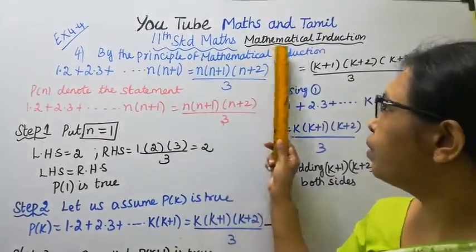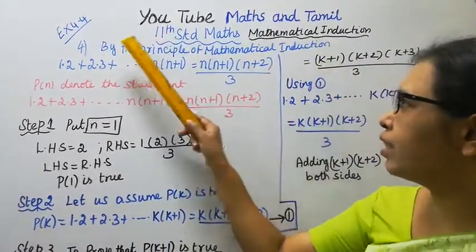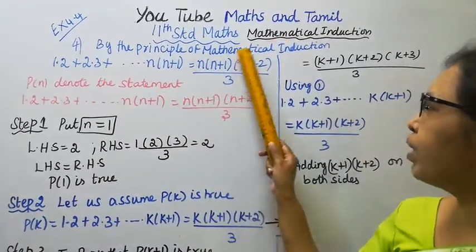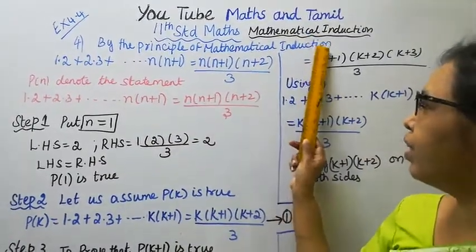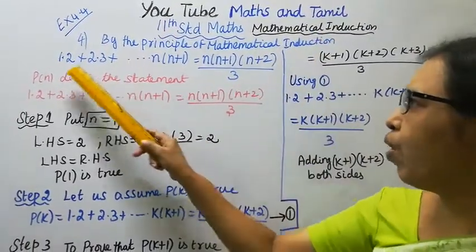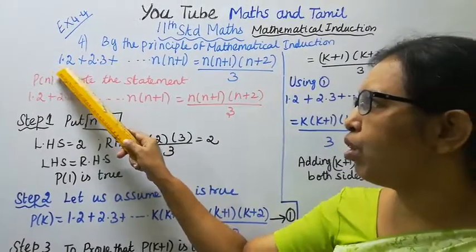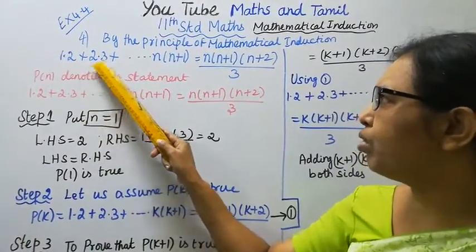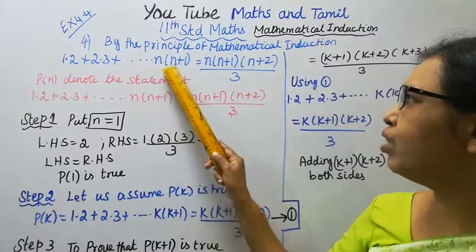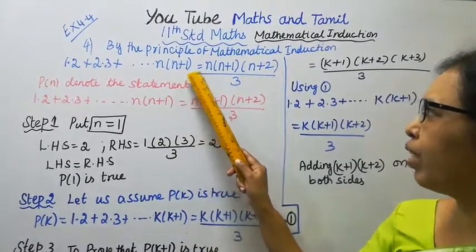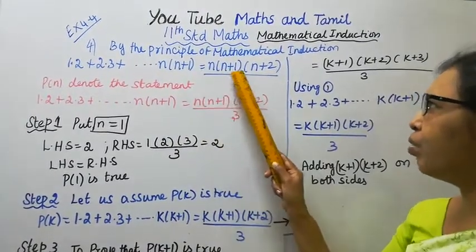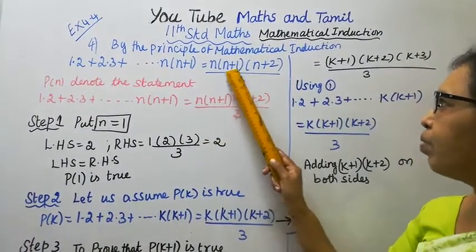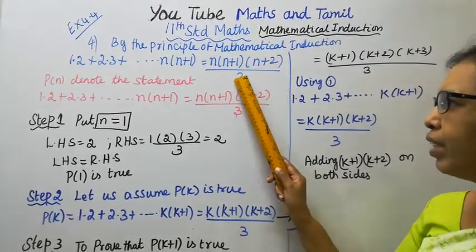Mathematical Induction exercise 4.44. By the principle of mathematical induction: 1·2 + 2·3 + ... + n(n+1) = n(n+1)(n+2) / 3.